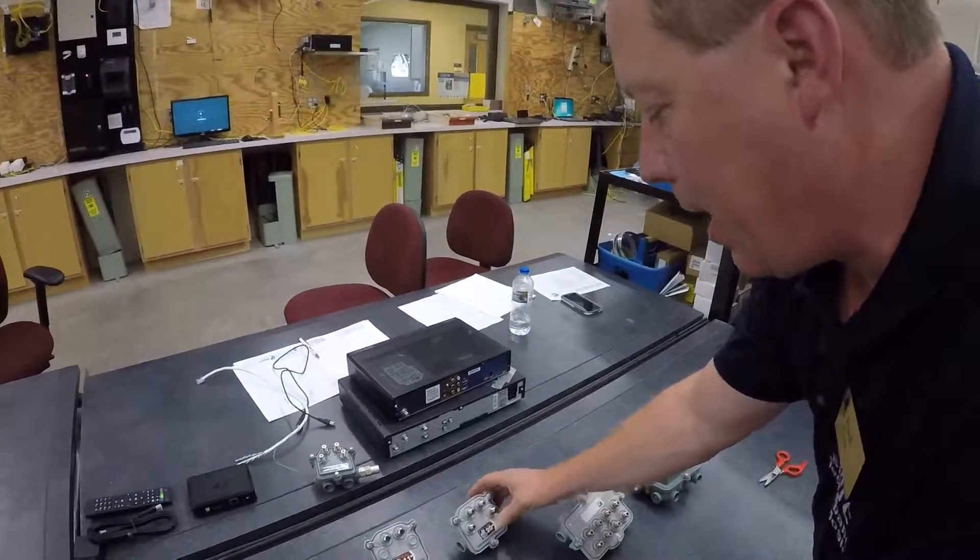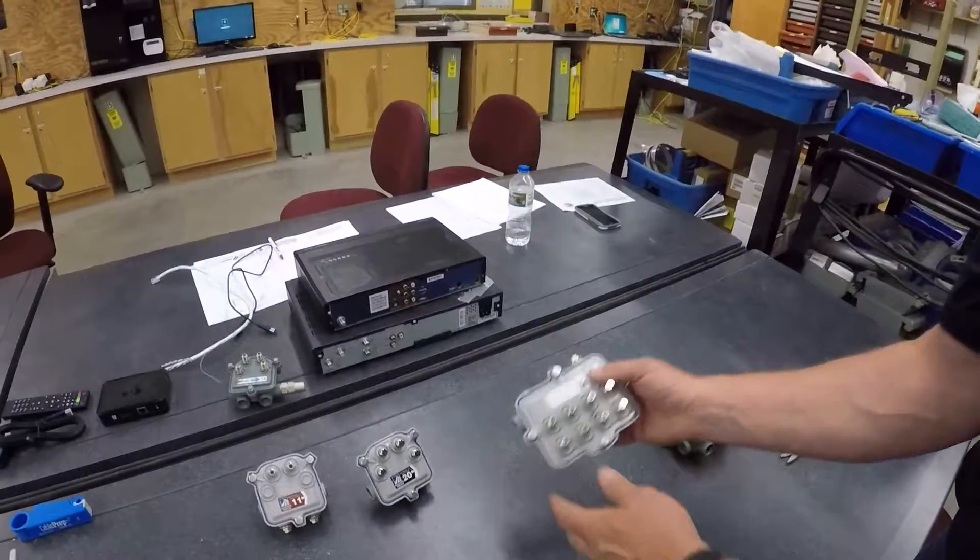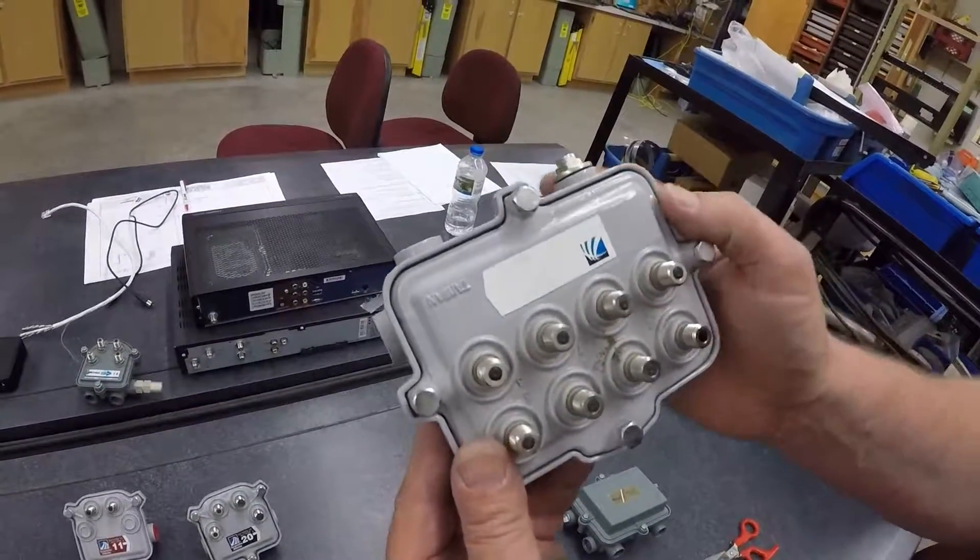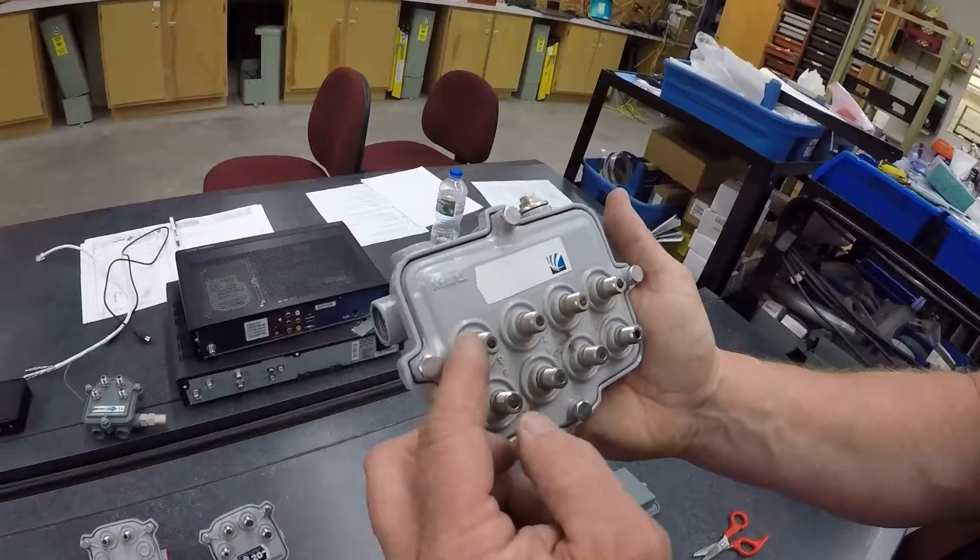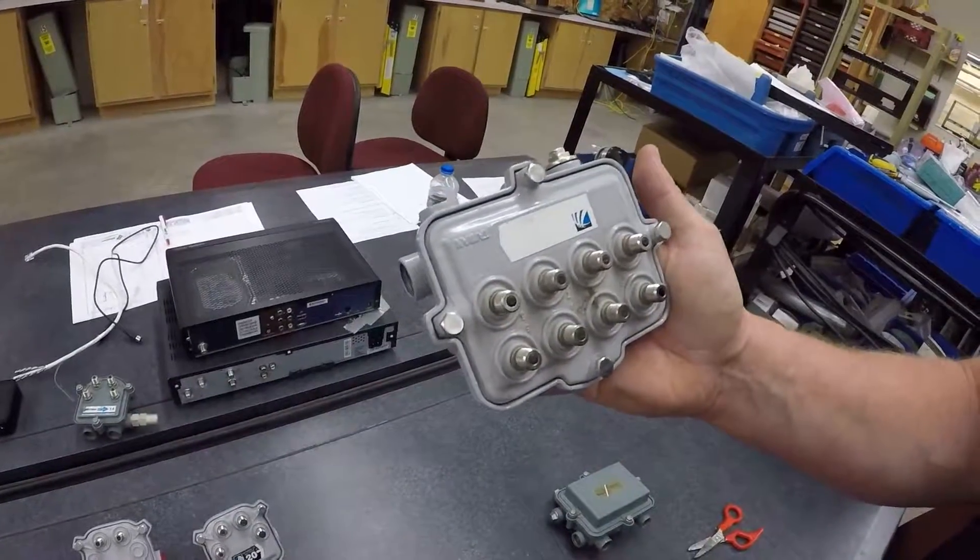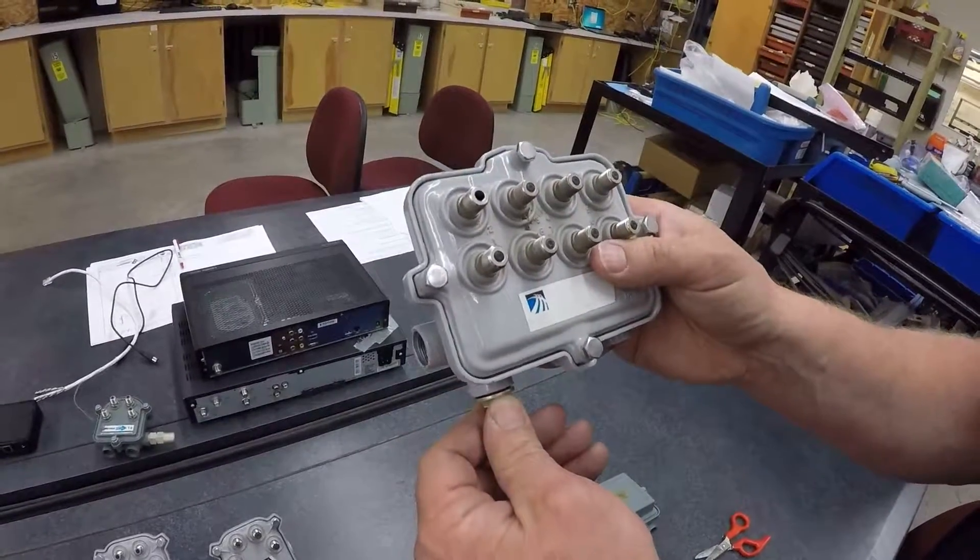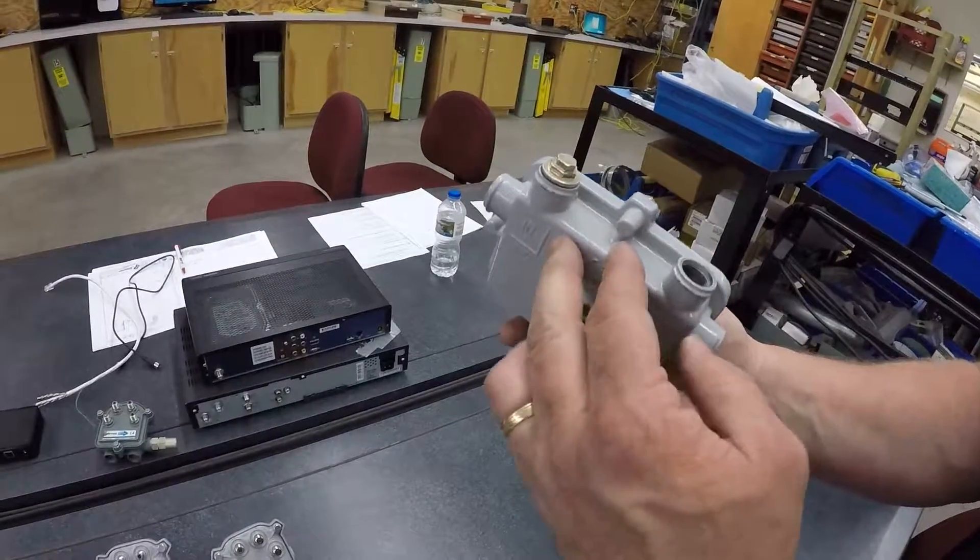The next tap I'm going to talk about is an eight port tap. Now this has a reading on there, but it looks like it got worn off. But here you have eight outputs. And once again, these are both made for overhead installation and underground installation.